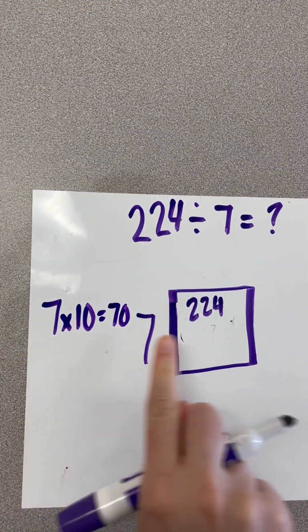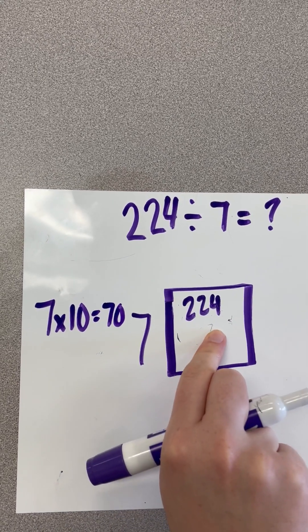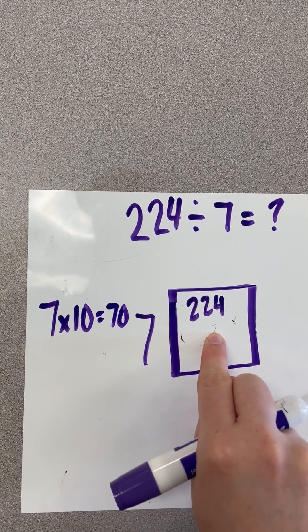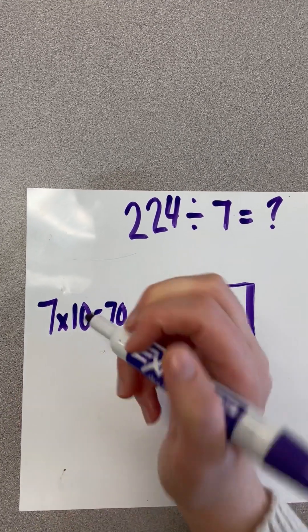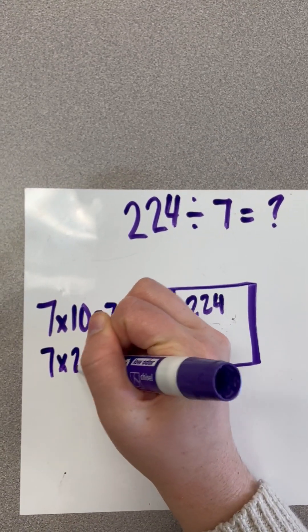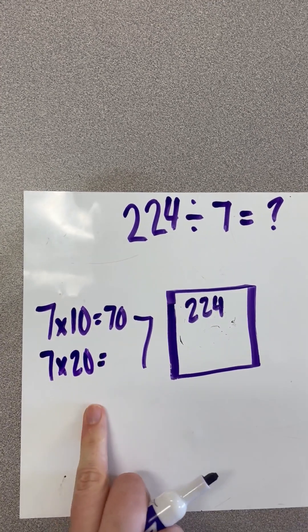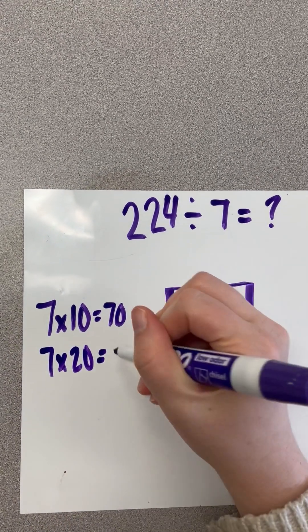Well, that gets me closer to 224, but there's probably something that could get me even closer. So instead of 10, let me try 7 times 20. Now 7 times 20 would be 140.